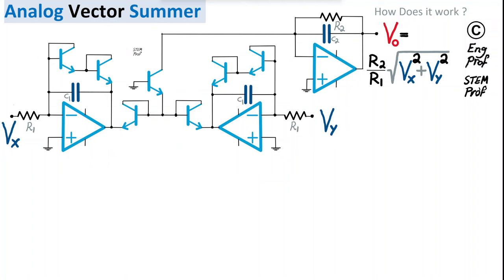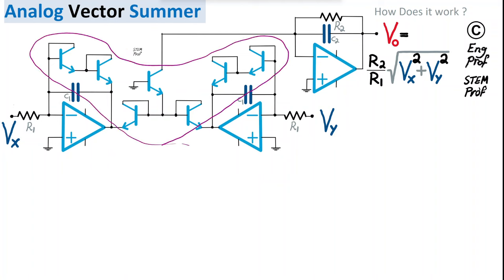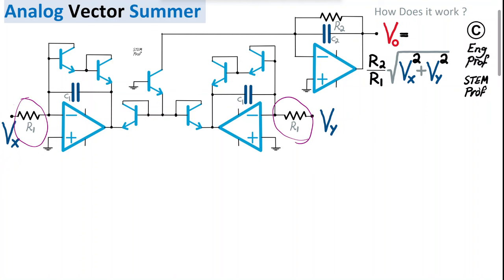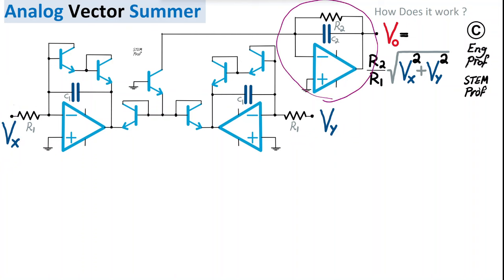There are a couple of options for matching these transistors, which will be discussed later. At the input, two voltages Vx and Vy are connected to the same resistor R1 that needs to be properly selected. At the output, the third op-amp stage produces the output voltage Vout.